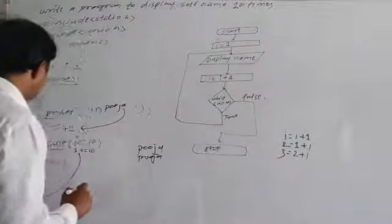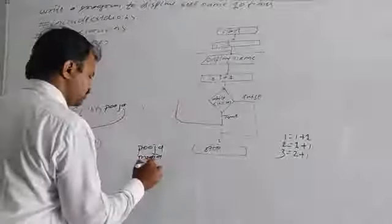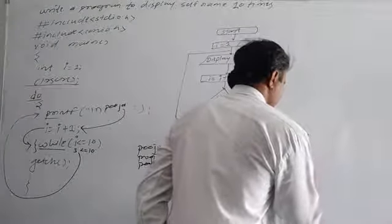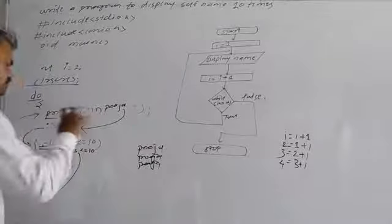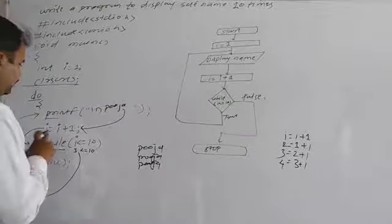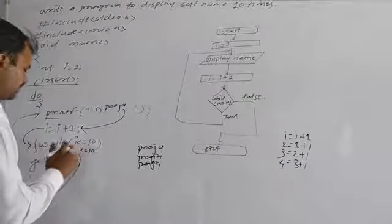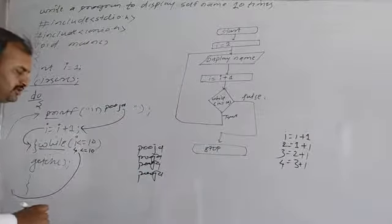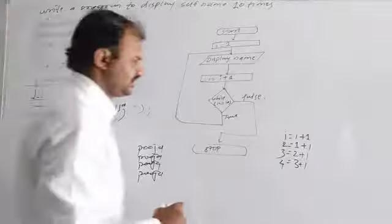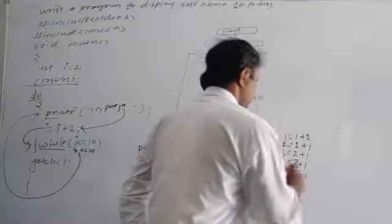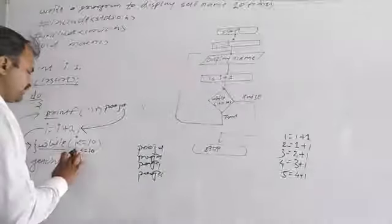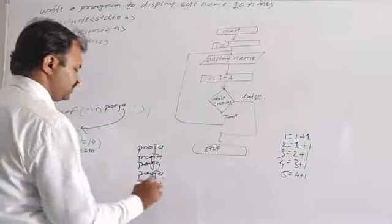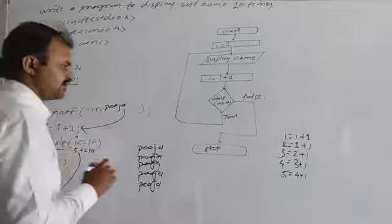Condition true, body of loop, cursor enter. Display the name, then counter increment. Condition true, body of loop executes. Same method, next condition check, if true continue.